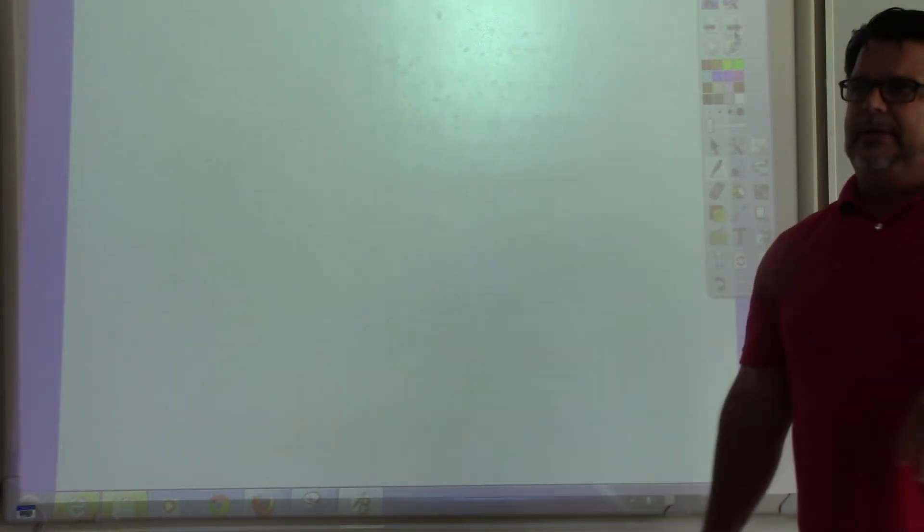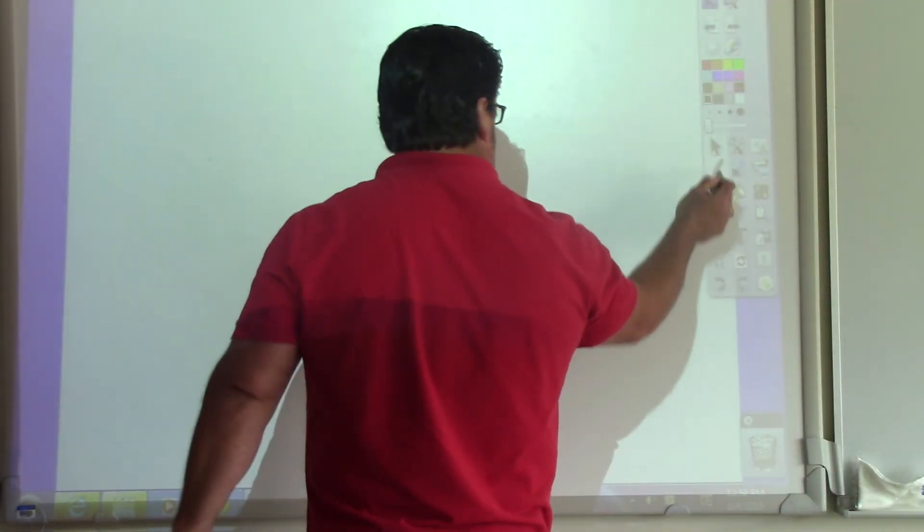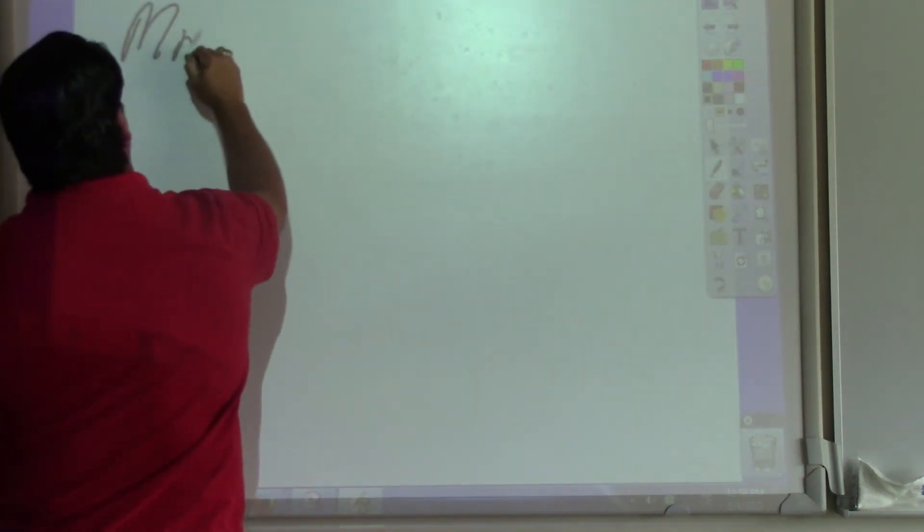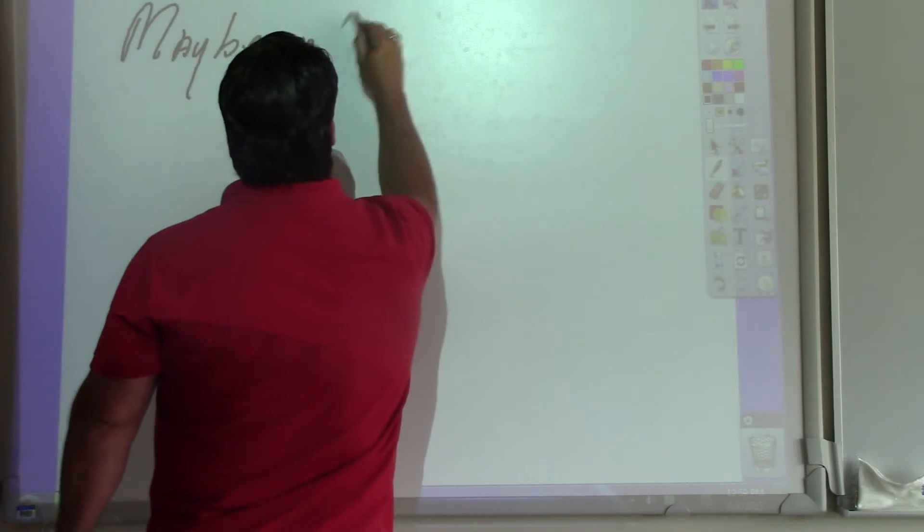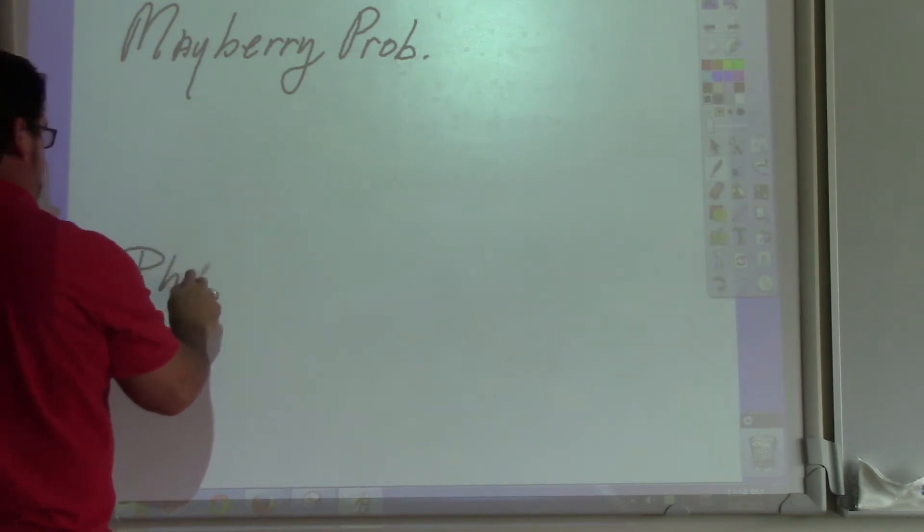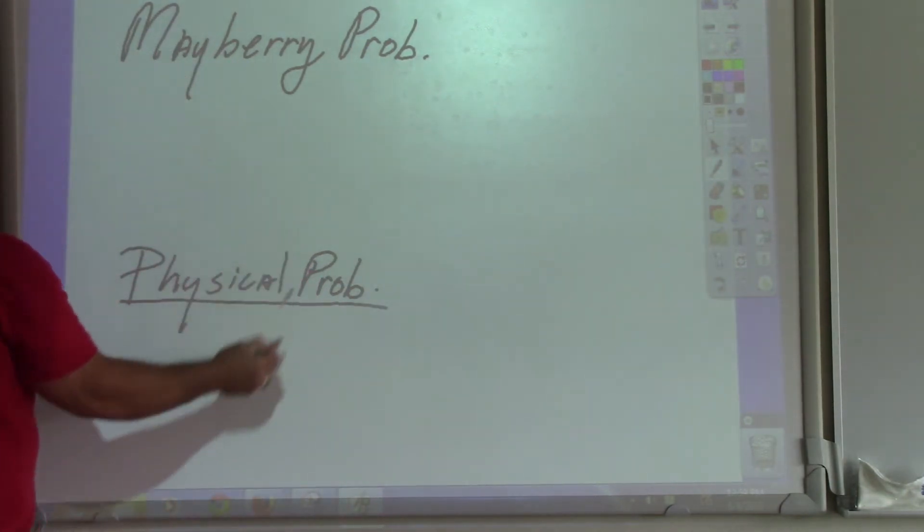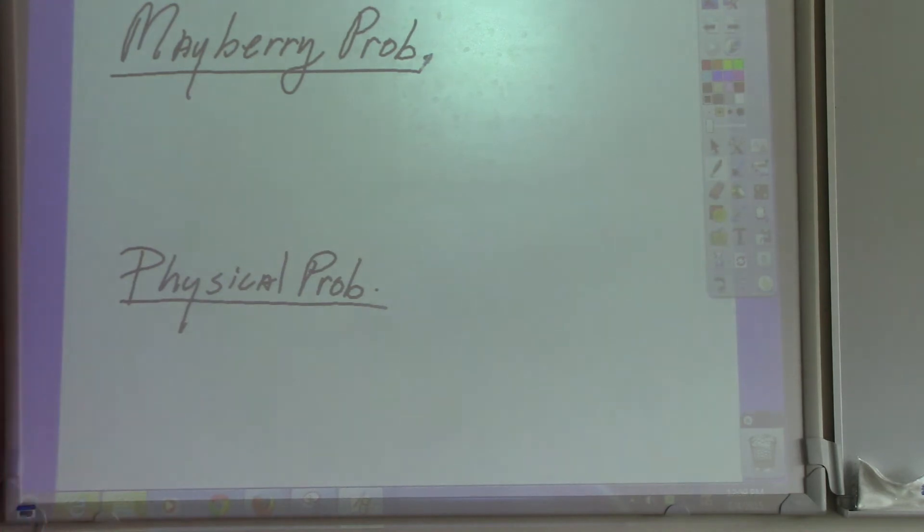Now, what you're going to do is decide what probability is being used. There's two probabilities. There is the Mayberry probability, and this is a Hubertism. And then there is the physical probability. And yes, they're both Hubertisms. Why do I use the word Mayberry? Because I'm an Andy Griffith nut. But what is Mayberry based on? What is Mayberry? Why do people like watching the Andy Griffith show?